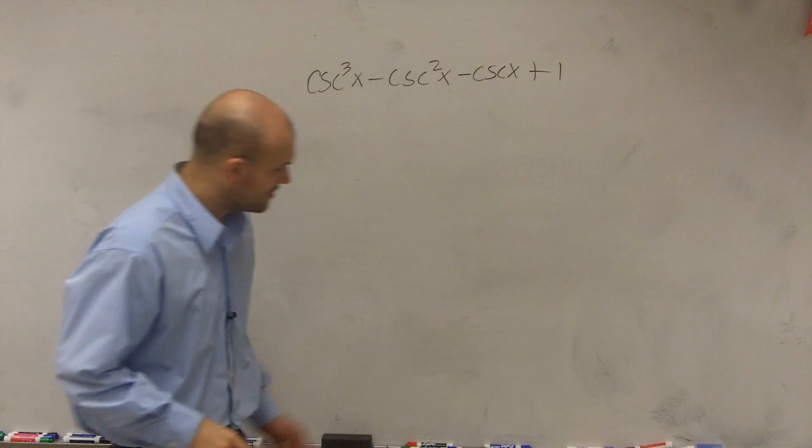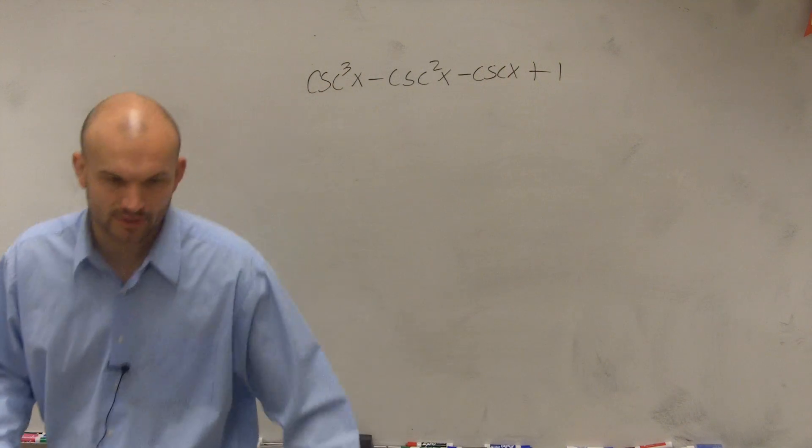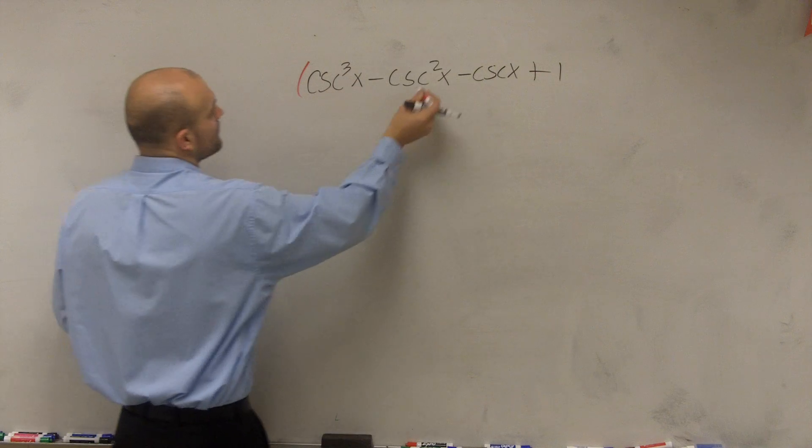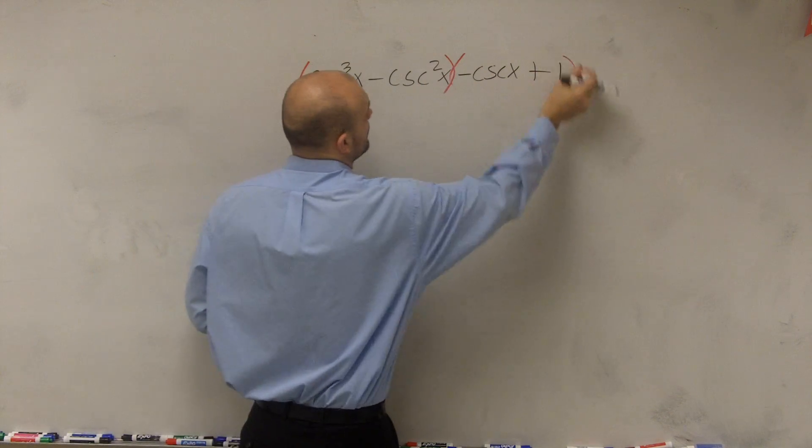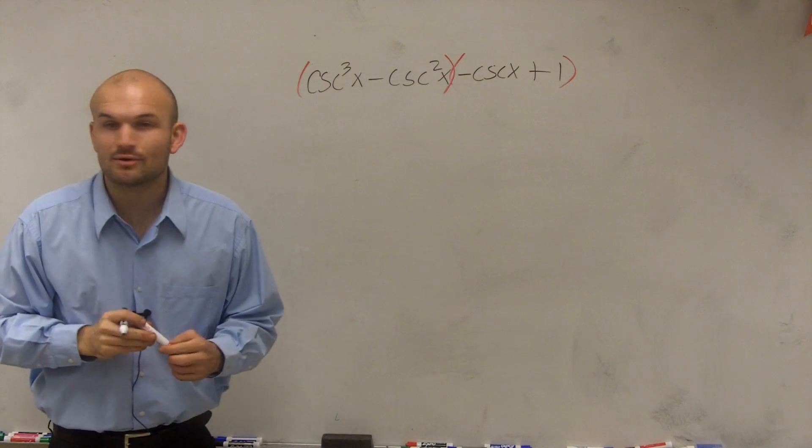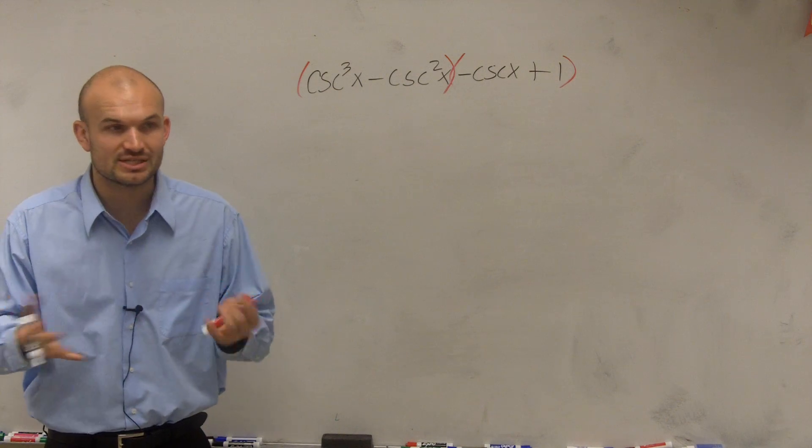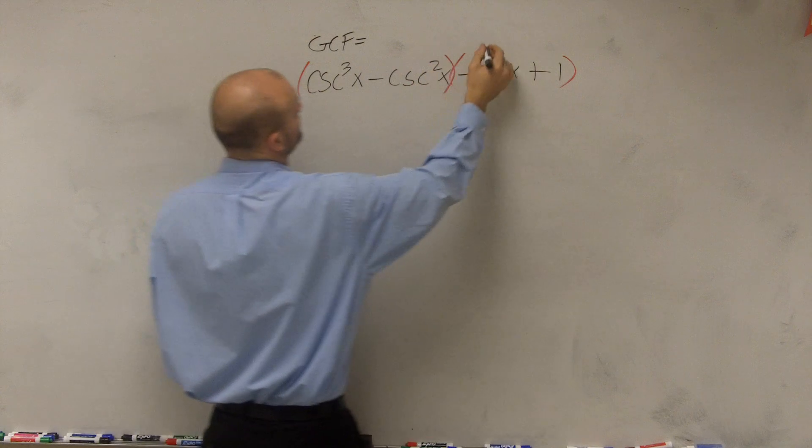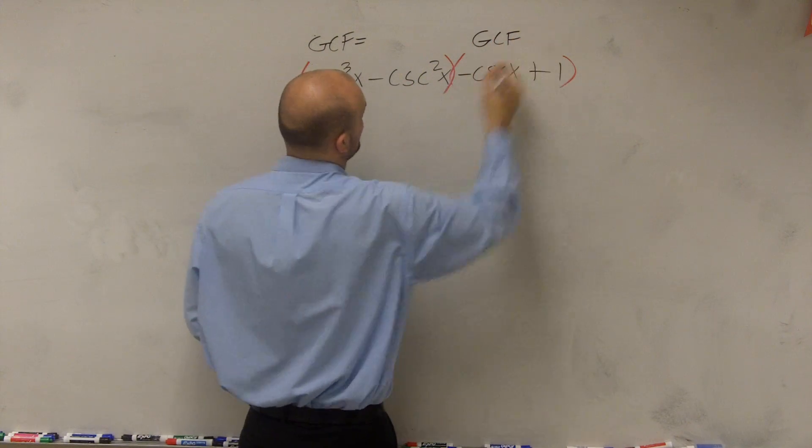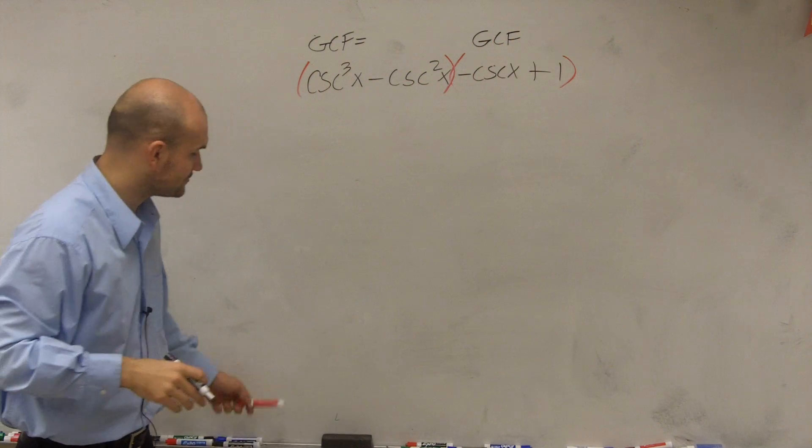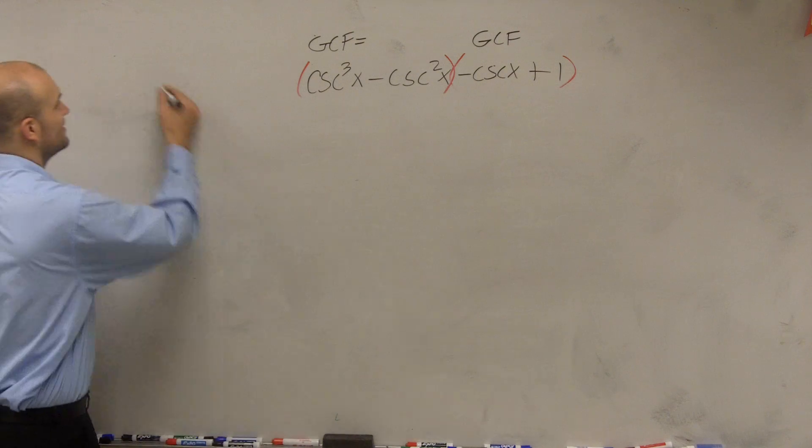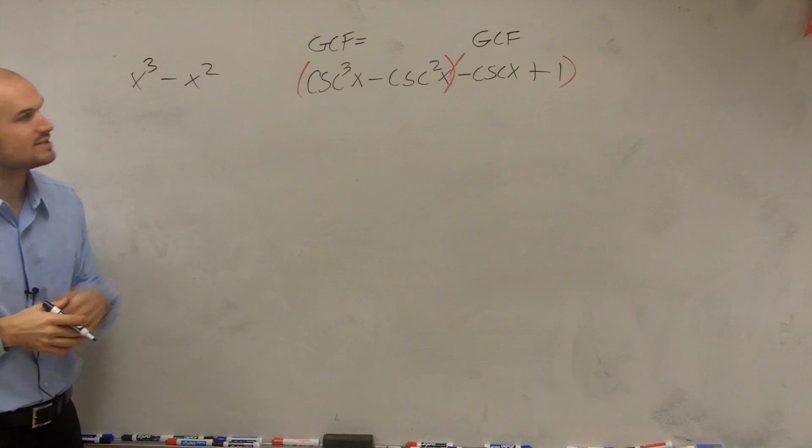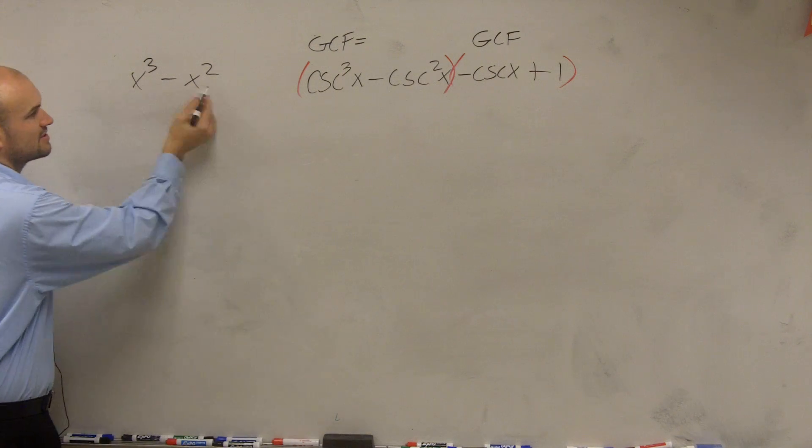So in factoring the grouping technique, remember the first important thing that you want to look at is just taking your first two terms and then your last two terms. So we group the first two terms. Then what you're going to do is you're going to determine the GCF for each term. So I'm just going to write GCF up top for each one. And that means the greatest common factor. So now, ladies and gentlemen, if I said, what's the GCF of this,